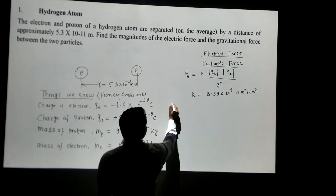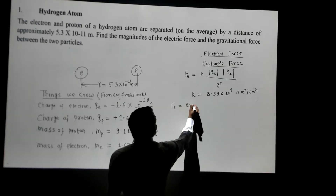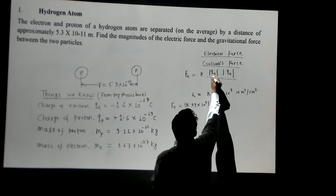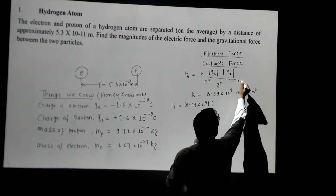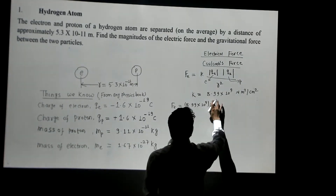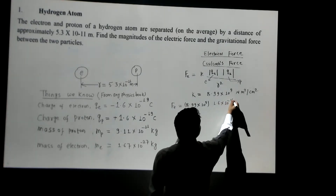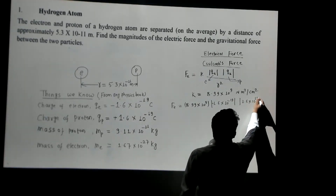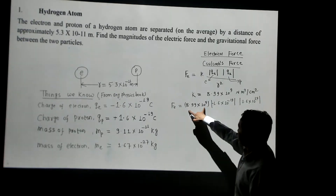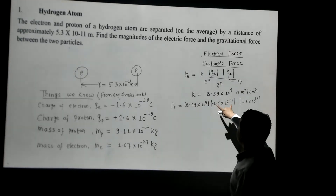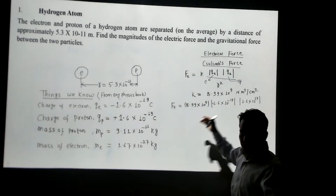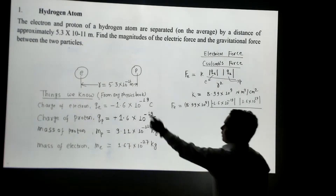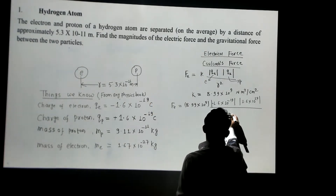Plugging in the values: k is 8.99×10⁹. The charge of the electron is 1.6×10⁻¹⁹ (taking the magnitude, so we drop the negative sign), and the charge of the proton is also 1.6×10⁻¹⁹. We take the absolute value of the charges so this gives just the magnitude of the force. The distance between the electron and proton in a hydrogen atom is 5.3×10⁻¹¹ meters, and we square that in the denominator.